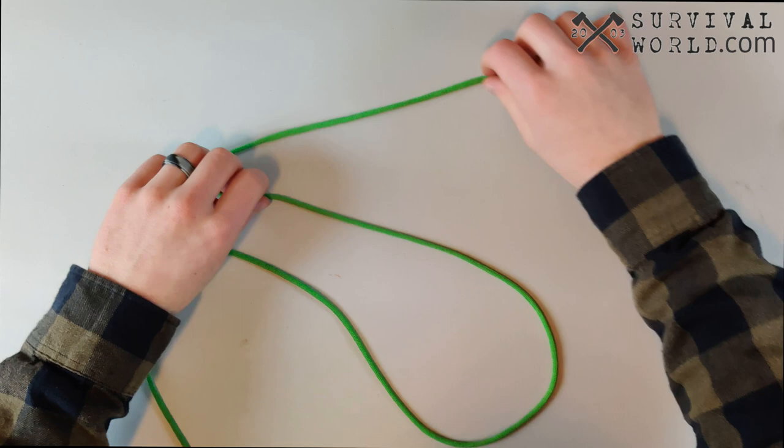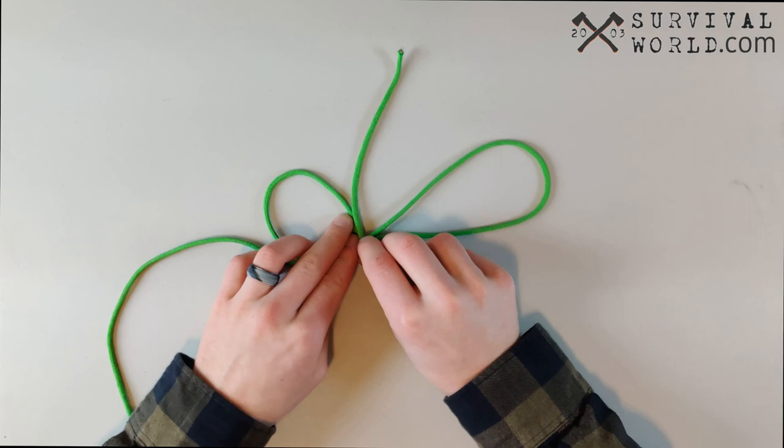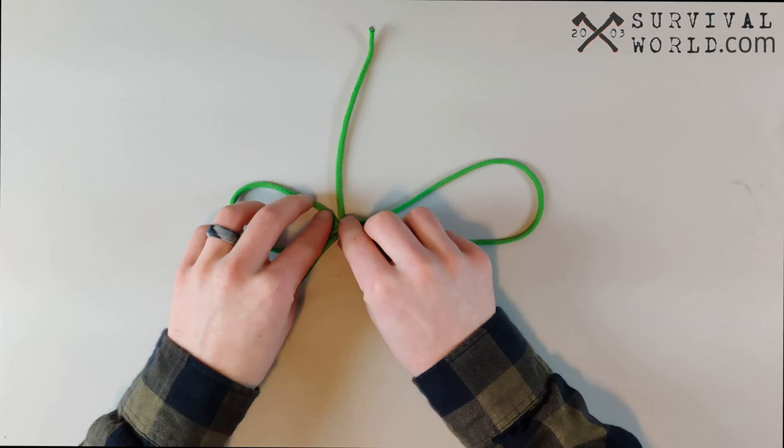Let me show you again a little bit faster. So we're gonna create our S. We're gonna take our top part and wrap it underneath our bottom part and over. I'm just gonna use my right hand and I'm just gonna hold this and pinch it so it has a nice tight bend around here.